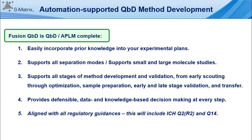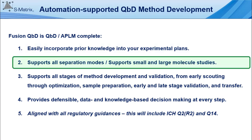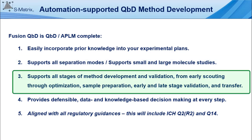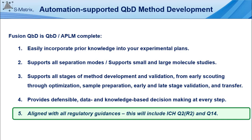As this presentation has shown, Fusion QBD is QBD APLM complete. It lets you easily incorporate prior knowledge into your experiment plans. It supports all separation modes and supports small and large molecule studies. It supports all stages of method development and validation from early scouting through optimization, sample preparation, early and late stage validation, and method transfer. It provides defensible data and knowledge-based decision making at every step, and it is aligned with all regulatory guidances, including ICH Q2, R2, and Q14.